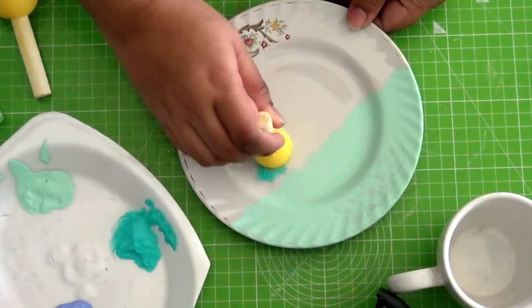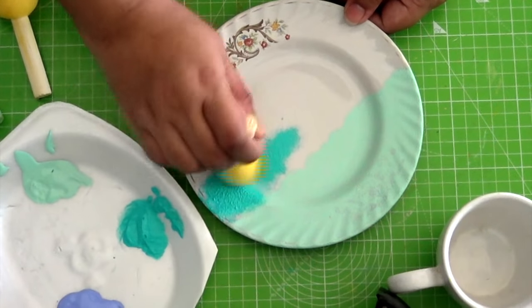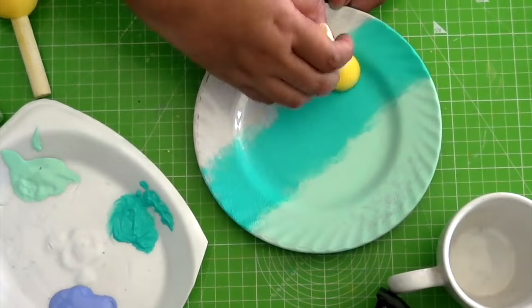Make sure you take a fresh sponge for every new shade. Don't worry about the crisp lines in between the shades for now.